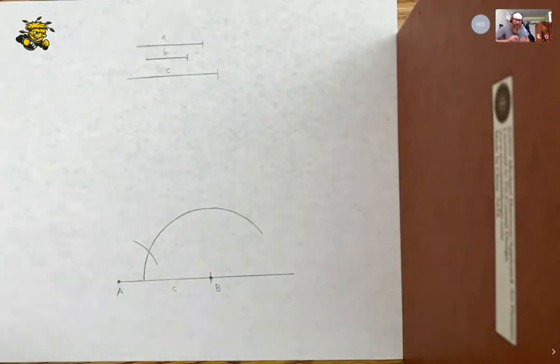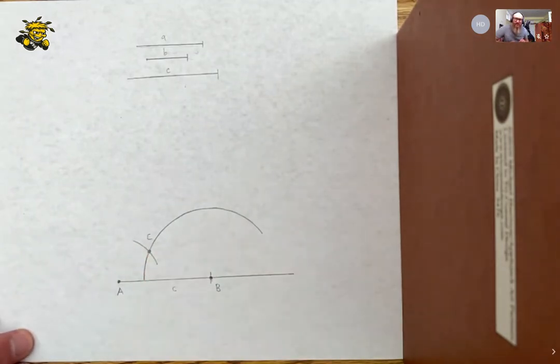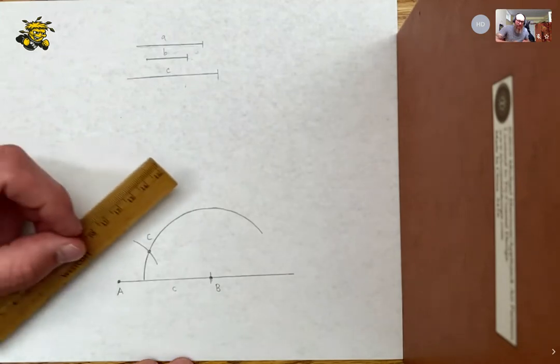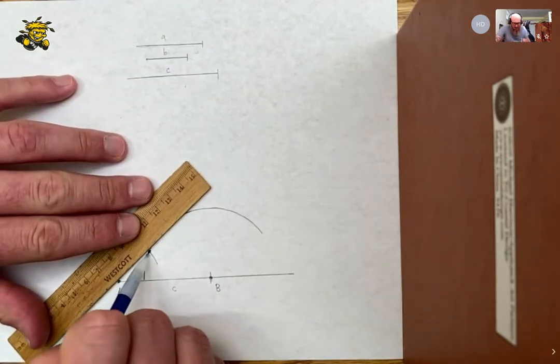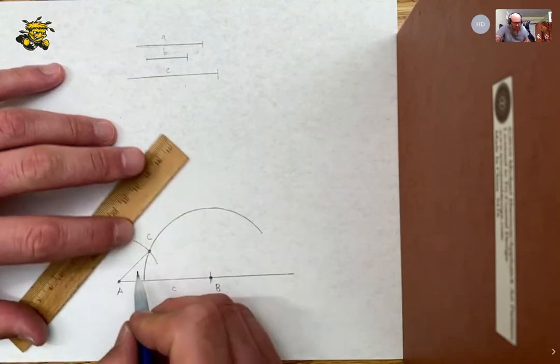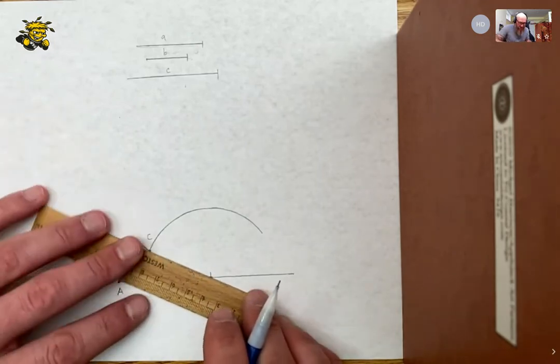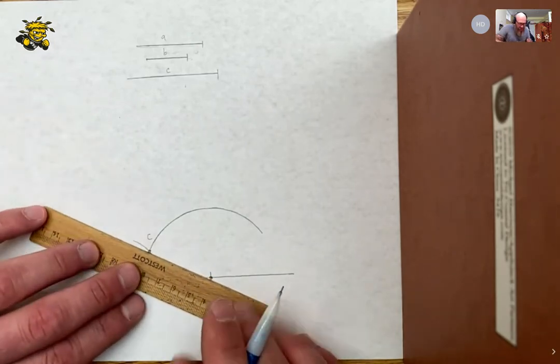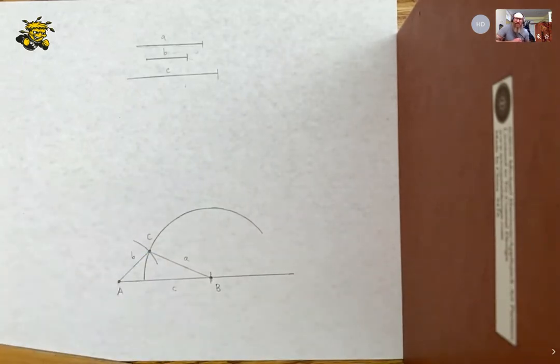And I claim that this vertex right here has to be the vertex C. Well, why is that true? Because based on the arc we just drew, if I connect these two points, we constructed it this way. If I connect these two points, this is length B by construction. I made it that way. And if I connect these two vertices, this has side length A by construction. We made it that way.